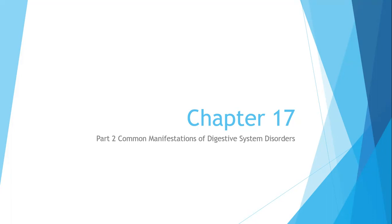One of the things we've noticed about talking about different system disorders with the cardiovascular and respiratory systems — not so much the endocrine system — is that there are common manifestations of disorders. With cardiovascular and pulmonary respiratory systems, you've got all these different disorders but the same manifestations. The same is true for digestive system disorders — there are common manifestations.